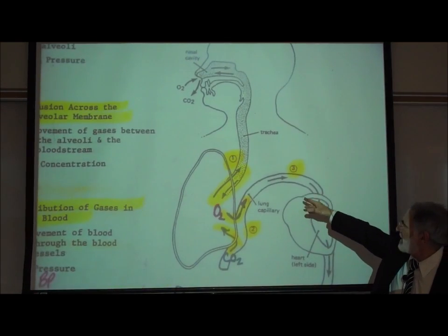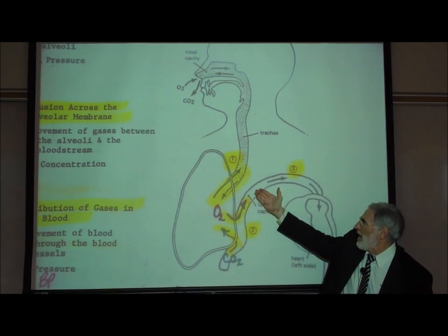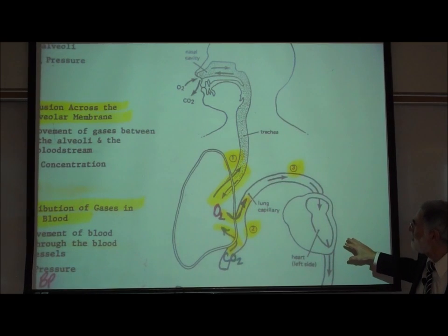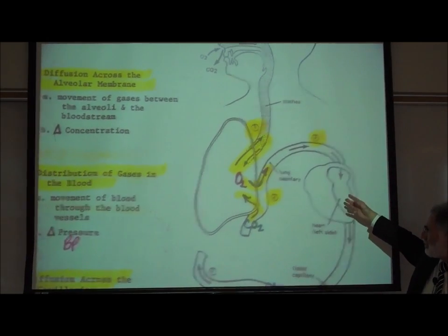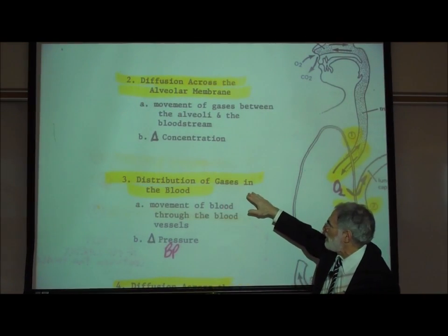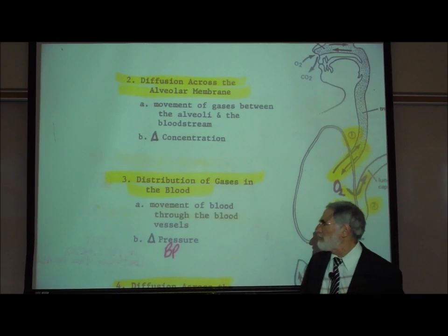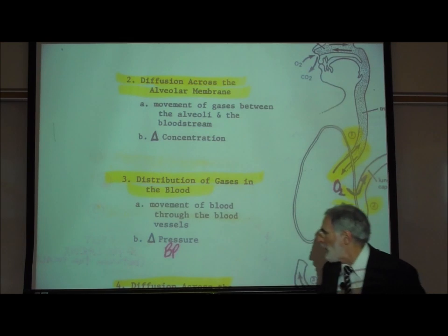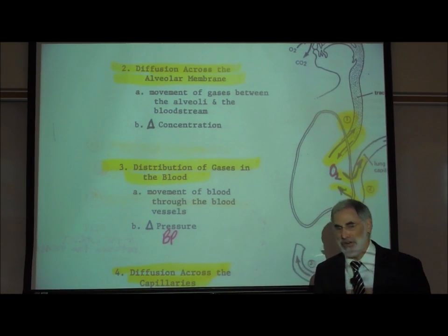Number three shows that oxygenated blood is then being pumped by the heart through the blood vessels of the body, so the oxygen is being distributed. Number three represents the distribution of gases in the blood — the movement of blood through blood vessels — driven by blood pressure created by the pumping action of the heart.